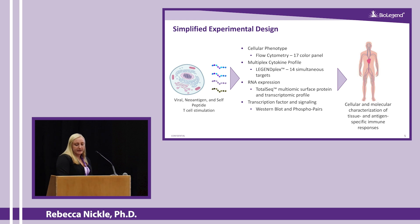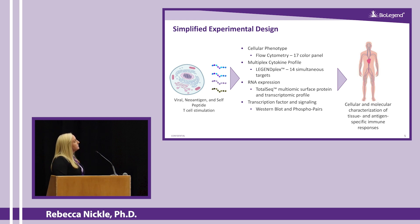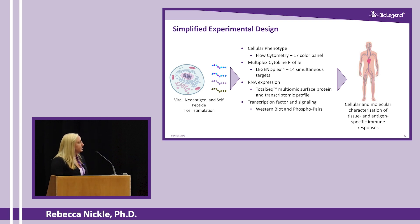To provide an example of how this may be done, we aimed to stimulate T cells with various viral neoantigen and self-peptides. Then we aimed to characterize those cellular responses through cellular phenotyping with flow cytometry, looking at cytokine profiles with LegendPlex, simultaneous RNA and protein expression with our TotalSeq platform, and lastly transcription factors and signaling with Western blot and some of our phospho pairs. In total, this gives us a complete visualization of cellular and molecular impacts on cells with various antigen-specific peptides.